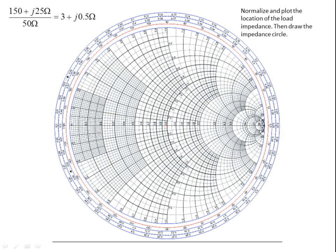Now we will normalize the impedance of the load to the Smith chart. The 50 ohms representing the transmission line is represented by the red dot in the center of the Smith chart, and we will normalize the load to that. 50 into 150 plus j25 gives us a value of 3 plus j0.5, which we can locate on the Smith chart where the real value of 3 intercepts the reactive value of 0.5. We identify that as the load.